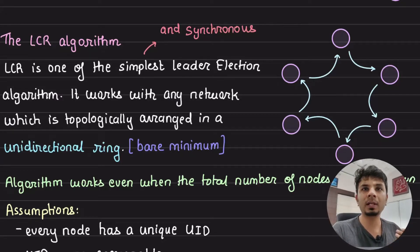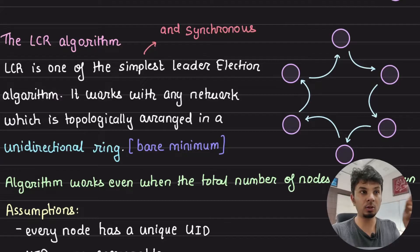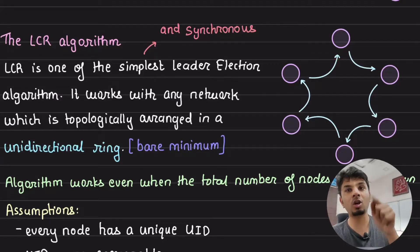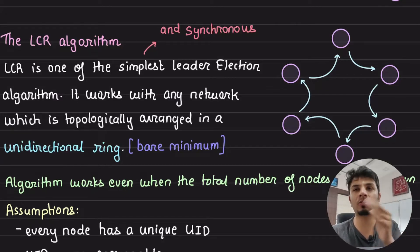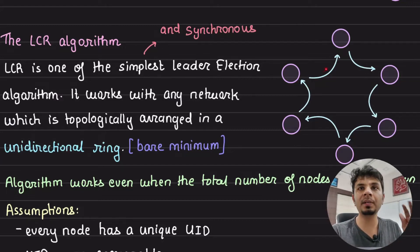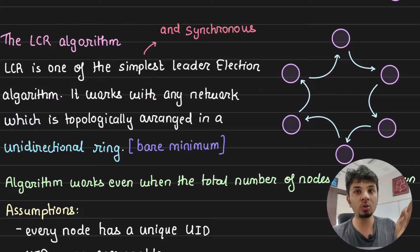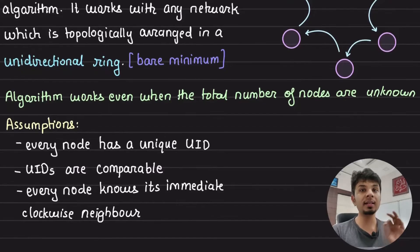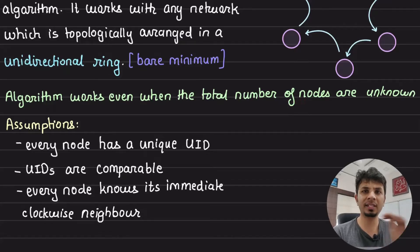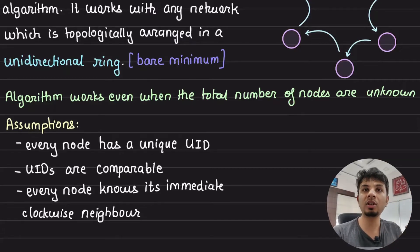Another thing this algorithm requires is that no matter how the topology is structured, there should be a way for nodes to know what's in the clockwise direction — the immediate neighbor in the clockwise direction. This means it needs to form a unidirectional ring. Every node needs to know some node in its clockwise direction. Importantly, this algorithm works even when we don't know the total number of nodes in the system.